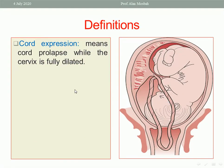Another expression is called cord expression. Cord expression means cord prolapse while the cervix is fully dilated. So if there is cord prolapse descending to the vagina and outside the introitus, it is called cord expression when the cervix is fully dilated.